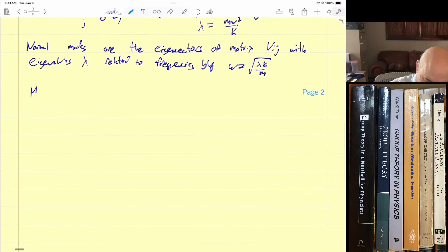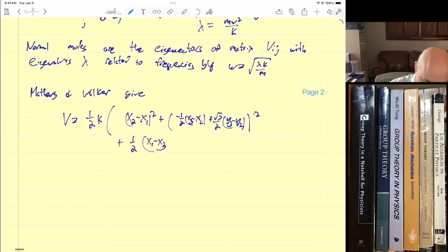So Matthews and Walker they give this expression for V: one-half k times x2 minus x1 squared plus minus one-half x3 minus x2 plus the square root of 3 over 2 times y1 minus y2 squared, and then they have another term plus one-half x1 minus x3 plus the square root of 3 over 2 y1 minus y3 square again.